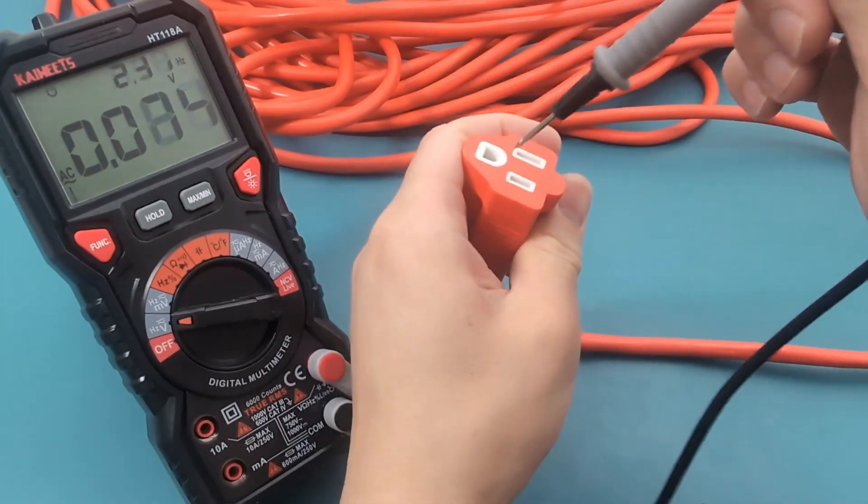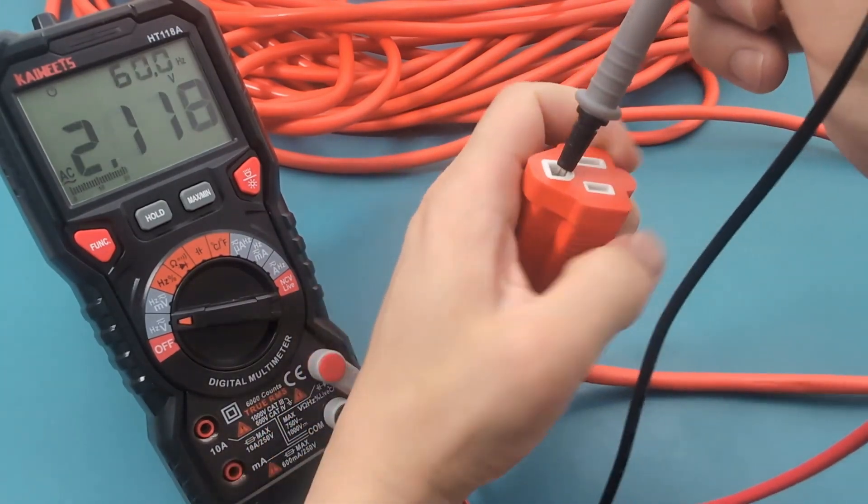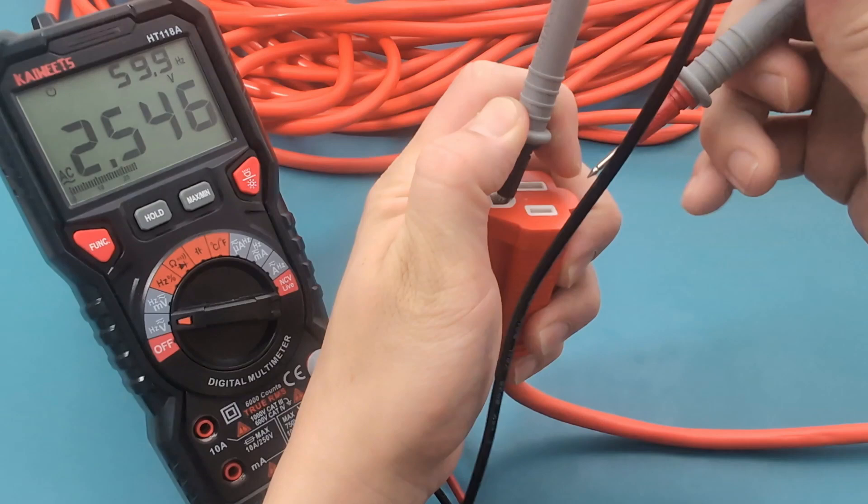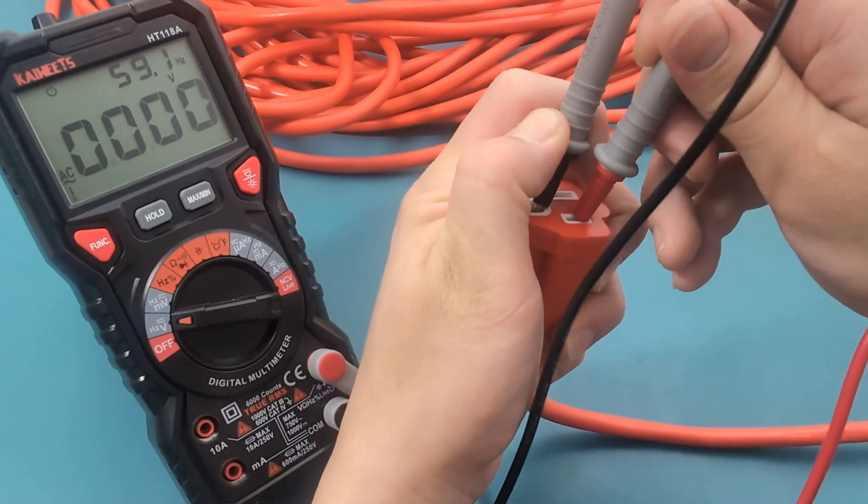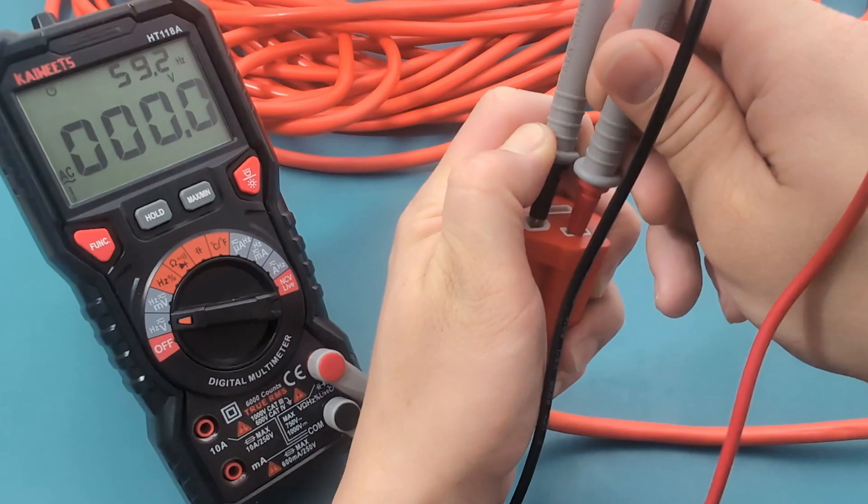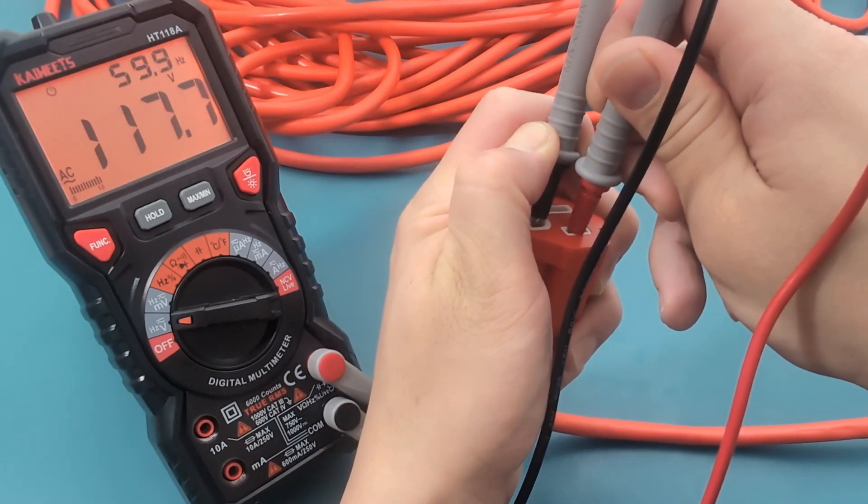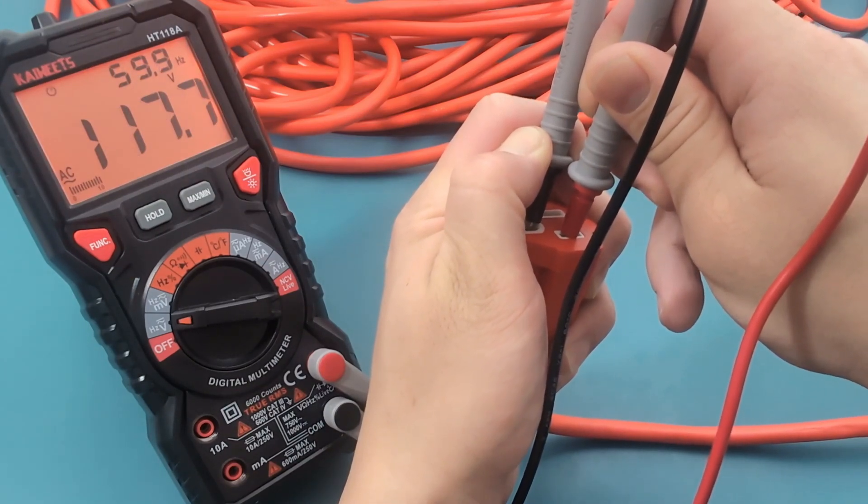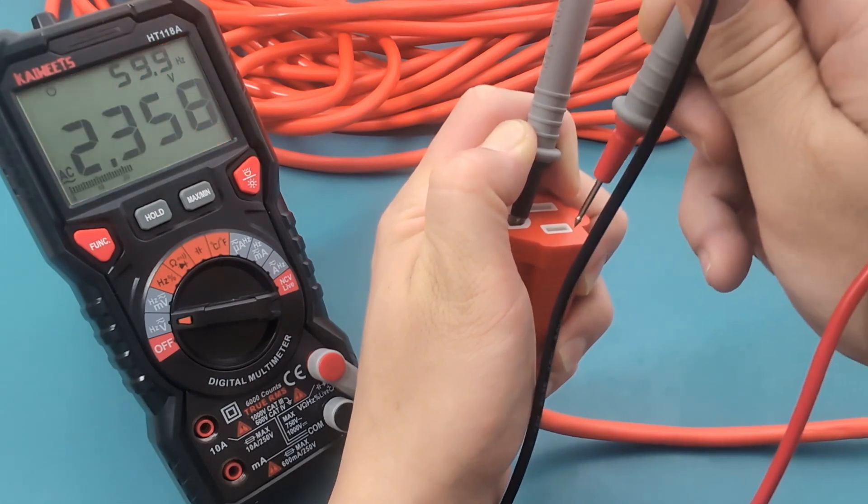Insert the black probe to the ground slot. Insert the red probe to the hot slot. The reading shows around 118 volts. This is a good sign.